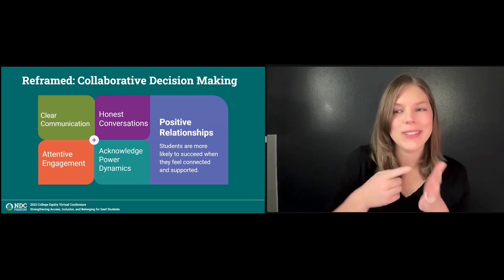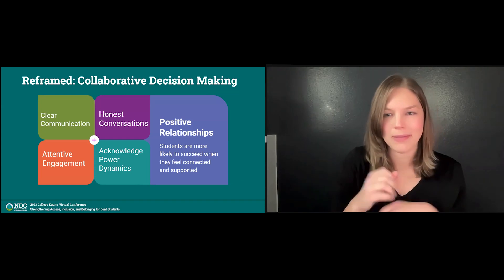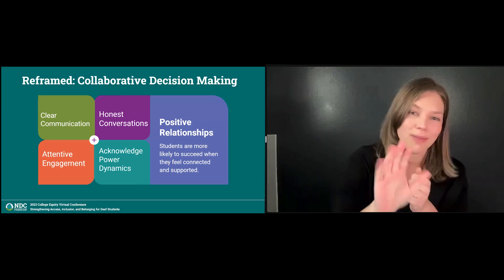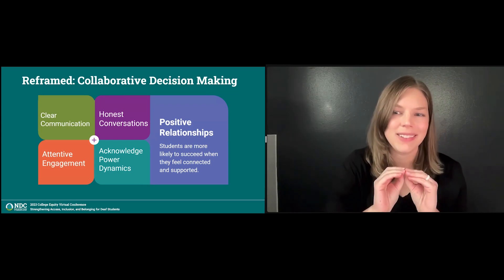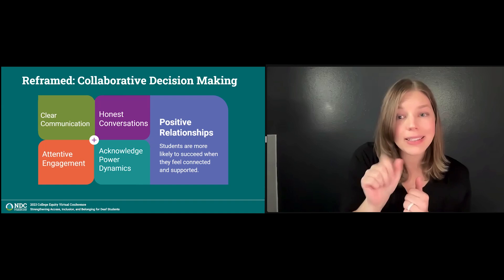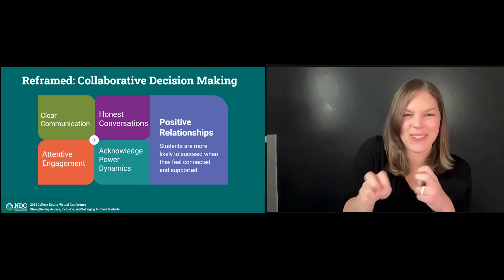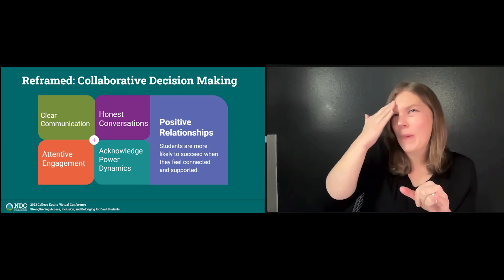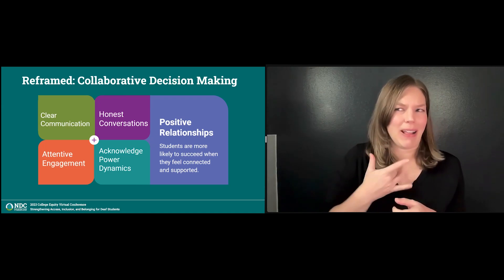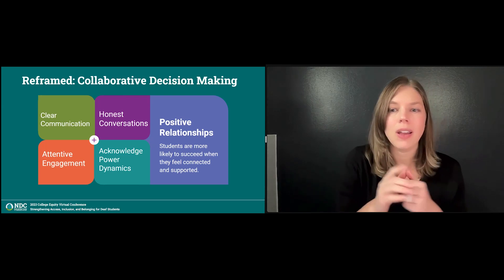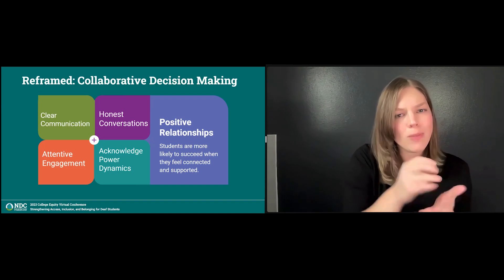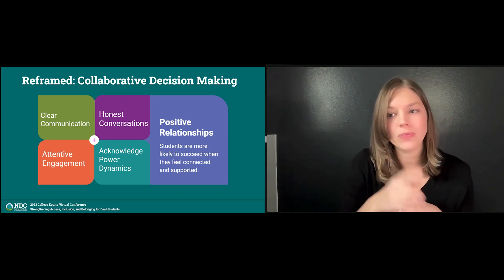Building a positive rapport with students starts with collaboration and shared decision making. When students feel connected and supported, they are more likely to succeed and to continue the interactive process with the disability services office. To build positive relationships, this involves first clear communication — keep the communication with students transparent and straightforward. As a disability resource professional, I know firsthand how difficult it can be to navigate student requests while also maintaining obligations from the administration. By being transparent with students about the why behind policies or practices, this can help students understand decisions. For example, you may need to communicate to students that you need requests for speech-to-text services by a specific date because it is much more difficult to secure accurate speech-to-text service providers, as most providers will have made their scheduling commitments with other schools by then.